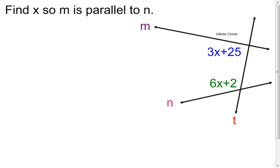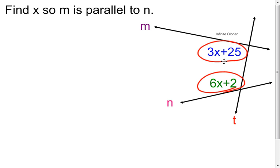The first thing I do is look at the two angles I'm working with. I notice that they're both on the inside of the two lines and on one side of the transversal. I think of them as same-side interior angles — another way to think of them is consecutive interior angles.